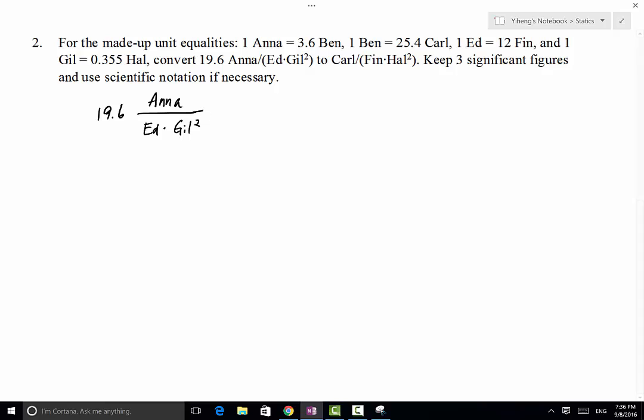As you can see, we do not have a direct relation between Anna and Carl. So in order to convert Anna to Carl, we need to convert Anna into Ben first and then Ben into Carl. But then we can convert directly from Ed to Fin and then directly from gill to Hall.